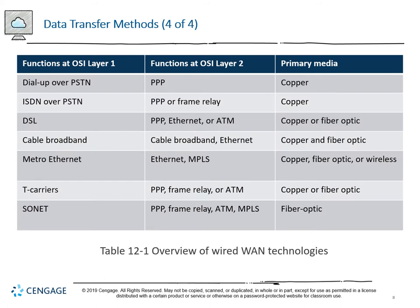Looking at data transfer methods: at OSI layer 1, dial-up uses PPP over copper lines. ISDN does the same and can also include frame relay at layer 2. DSL can use PPP, Ethernet, or ATM over copper or fiber optic. Cable broadband uses cable broadband standards and Ethernet with copper and fiber optic. Metro Ethernet uses Ethernet or MPLS with copper, fiber, or wireless - the broadest of WAN technologies. T-carriers use PPP, frame relay, or ATM over copper or fiber optic. SONET uses PPP, frame relay, ATM, or MPLS, primarily fiber optic and is probably the most versatile.